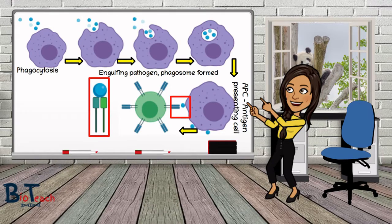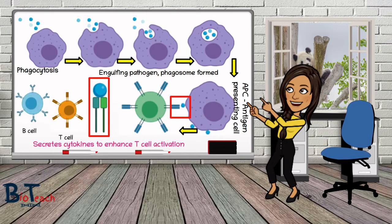The macrophage also produces and releases cytokines which enhance T-cell activation. The activated T-cell then releases more cytokines, which causes the proliferation of other helper T-cells and helps to activate cytotoxic or killer cells, as well as antibody-producing B-cells.